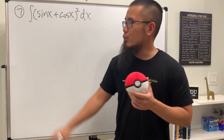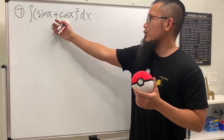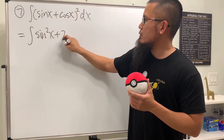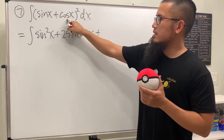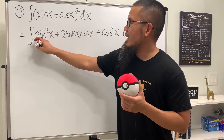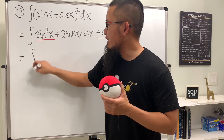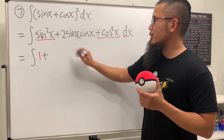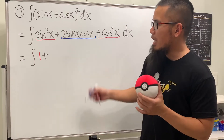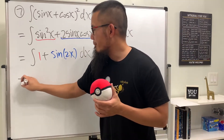For number seven we have the integral of sine x plus cosine x, all squared. Don't do anything fancy — just do algebra and multiply it out. We get sine squared x plus two sine x cosine x plus cosine squared x. Now, sine squared x plus cosine squared x equals one. And two sine x cosine x is just the double angle identity for sine backwards — it's sine of 2x. So this equals the integral of one plus sine of 2x.